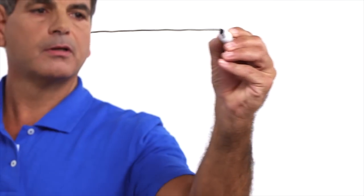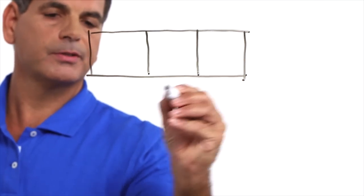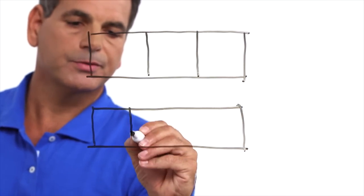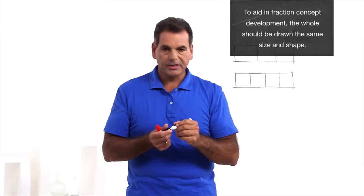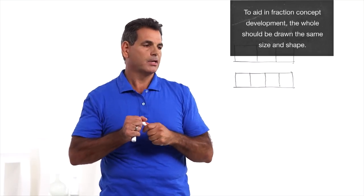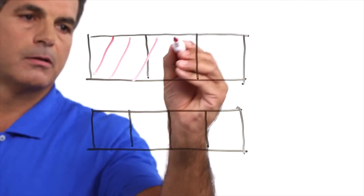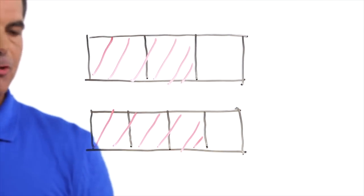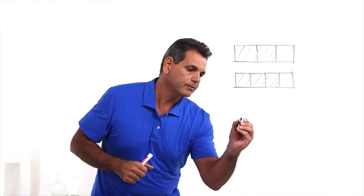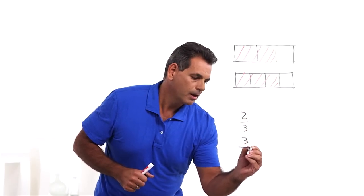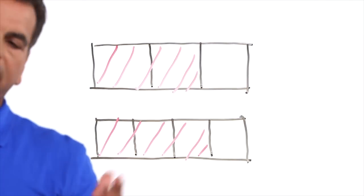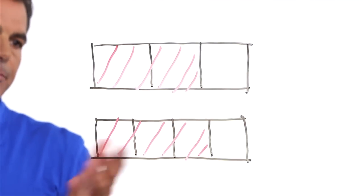I'm going to draw two bar models. This one is going to be thirds, and the second bar model, using the same whole, we're going to make fourths. I'll indicate the fraction by shading — it helps to use a different color. So now this represents two-thirds and this represents three-fourths. Let's write those fractions down: two-thirds and three-fourths. Now we want to compare them. With this particular case, they're pretty close, so you can't accurately compare them by using just the picture.